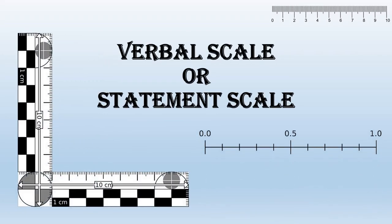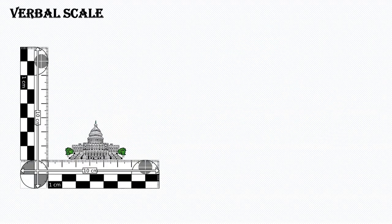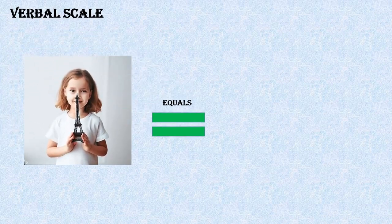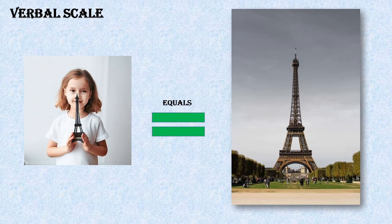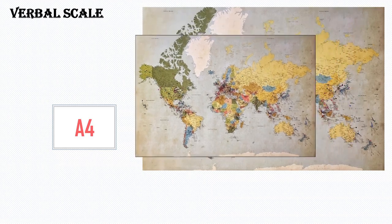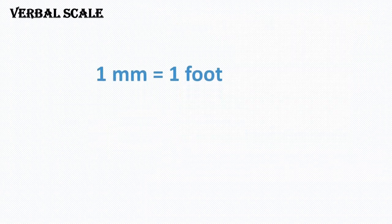We will be creating a measurement scale using text boxes, because we will be using a scaling method called the verbal scale or statement scale. This is a very simple method to scale down huge drawings or maps. It is useful when you want to relate smaller units of measure with larger units of measurement — telling that this small object is a representation of this big real-world object. This scaling method is the best option when you want to scale down and fit large maps or plans in a limited space such as an A4 size paper.